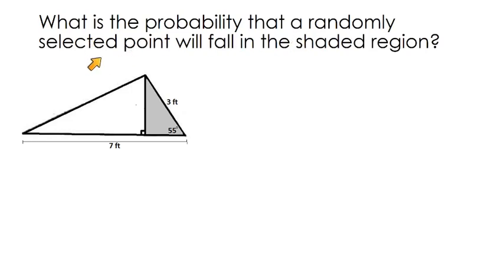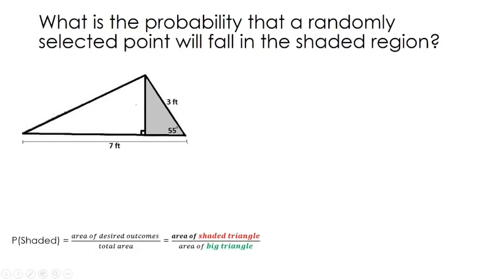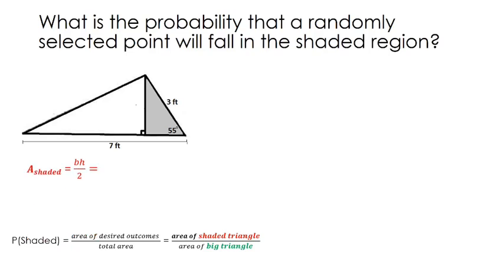What is the probability that a randomly selected point will fall in the shaded region? You've got a shaded region inside an overall triangle. The probability of landing in the shaded region is the area of the shaded triangle divided by the total area — the area of the big triangle. So we have a couple of sub-problems: find the area of the inner shaded triangle and the area of the overall triangle.